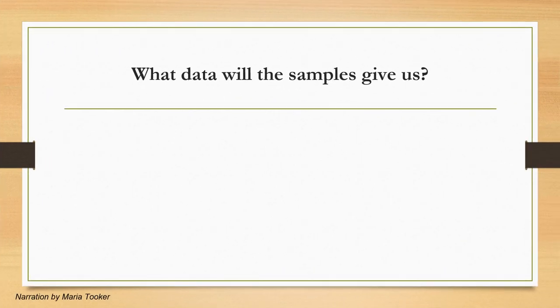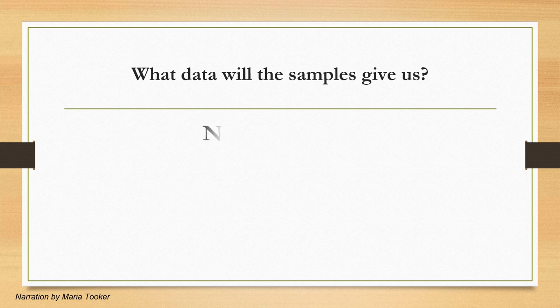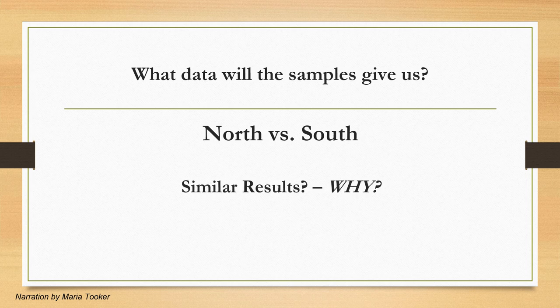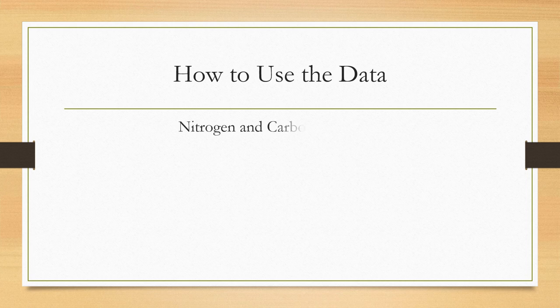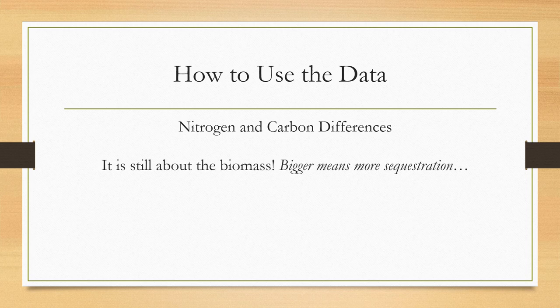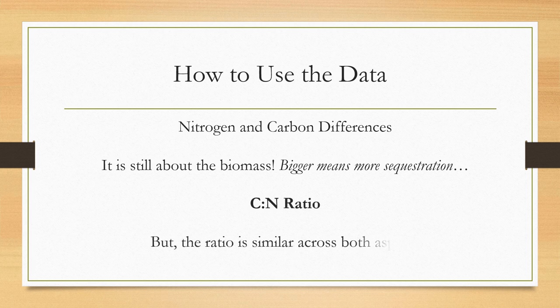What data will the samples give us? The samples themselves and the data derived from the mass spectrometry process will show the net differences in carbon and nitrogen compositions of trees of the north aspect versus the south aspect of Kamiak Butte. While it may make sense to hypothesize that the north-facing aspect would have higher concentrations of carbon and nitrogen, the two aspects are remarkably similar. We can conclude that the markable differences are the biomass present on each aspect. To use the data obtained from mass spectrometry analysis, compare the concentrations of nitrogen and carbon between core samples from both aspects. Note the biomass associated with each sample from each aspect. Note that the ratio is similar across both aspects and the difference comes from the differences in biomass.